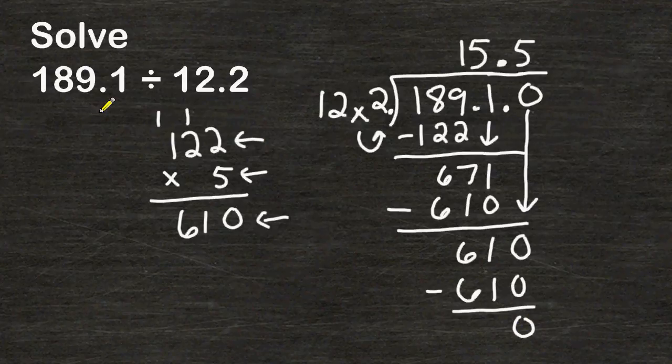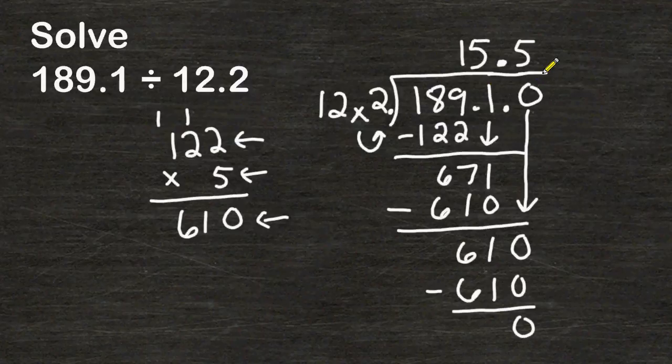So 189 and 1 tenth divided by 12 and 2 tenths is equal to 15 and 5 tenths which is the same thing as 15 and 1 half.